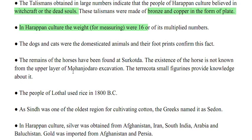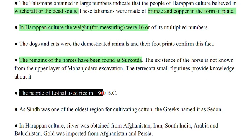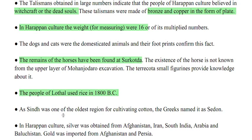The remains of horses have been found at Surkota. The existence of the horse is not confirmed from the upper layer of Mohenjo-daro excavation. The people of Lothal used rice in 1800 BC. As Sindh was one of the oldest regions for cultivating cotton, the Greeks named it Sedon.